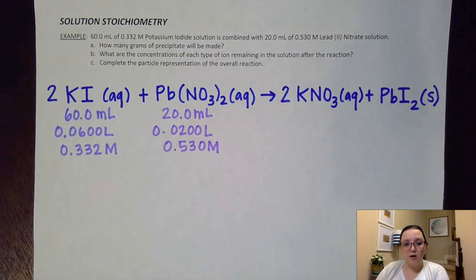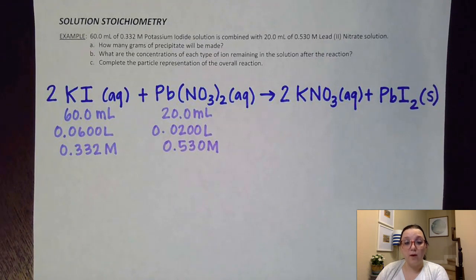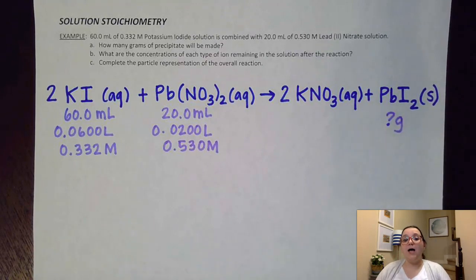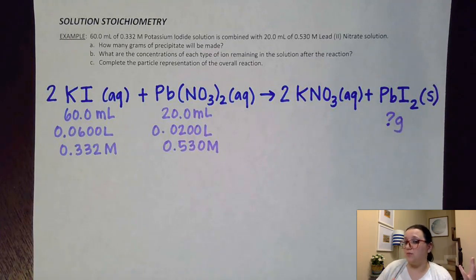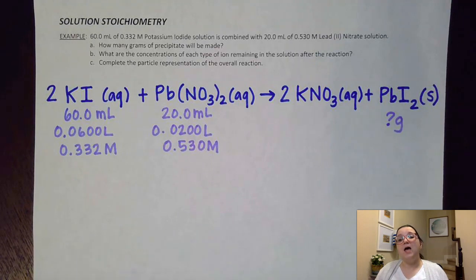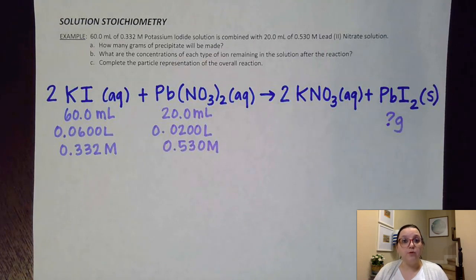Part A asks how many grams of the precipitate will be made. The precipitate is PbI₂, so I put a question mark for grams. They've given me amounts of two different reactants and asked about the amount of a product, so I can see that this is a limiting reactant problem. I'm going to have to take both reactants and figure out how much product they're each capable of making, so I'll create a calculation map for both.